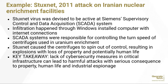The authors give the example of the Stuxnet virus, which is probably familiar to many of you listening. This was the 2011 attack on Iranian nuclear enrichment facilities, and it was devised to target a Siemens supervisory control and data acquisition system — a SCADA system. The infiltration happened through Windows-installed computers with internet connections, and the SCADA systems were responsible for controlling the turn speed of centrifuges used in uranium enrichment. The Stuxnet virus caused the centrifuges to spin out of control, resulting in explosions with loss of property and potentially human life. Their key takeaway was that lack of cybersecurity measures in critical infrastructure can lead to harmful attacks with serious consequences to property, human life, and industrial espionage.